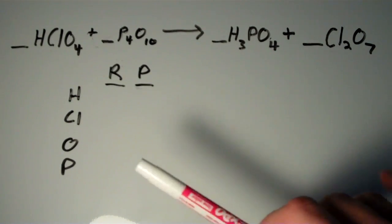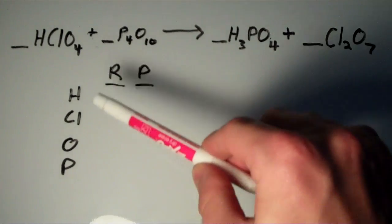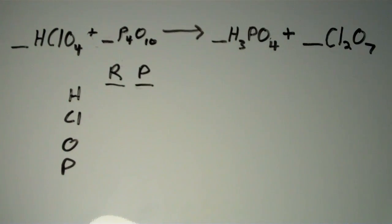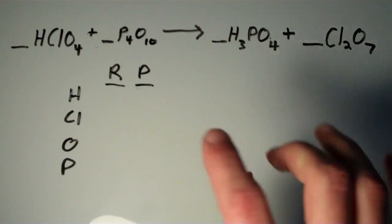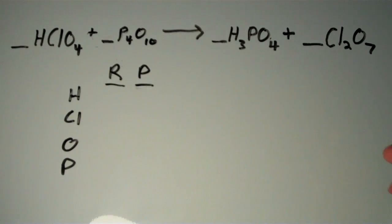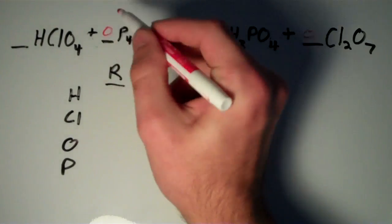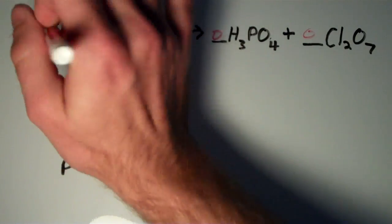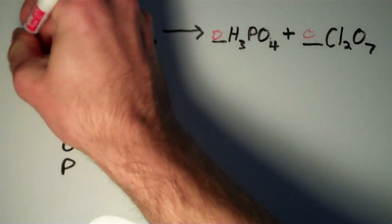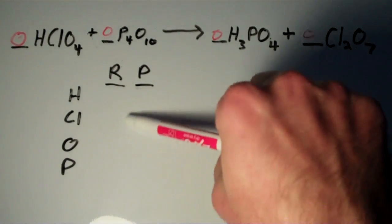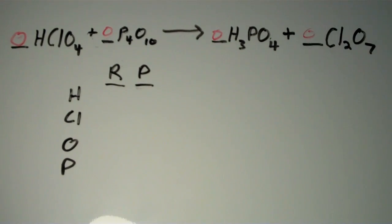And as we're balancing this thing we're going to keep a running count of how many atoms, how many of each type of atom we have on the reactant side and the product side. So before we do any of this what you need to do is just put a zero in front of every chemical species. So I'm going to put a zero in front of everything. So that means we have none of any of these atoms so far.